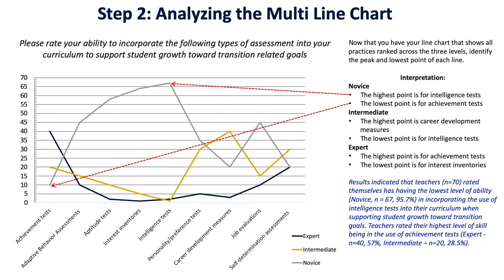For intermediate, the highest point is career development measures, and the lowest point is for intelligence tests. For expert, the highest point is achievement tests and the lowest point is interest inventories. I recommend writing up your initial interpretation that way — with bullet points for highest and lowest per scale level — before you put a cohesive summary paragraph together.